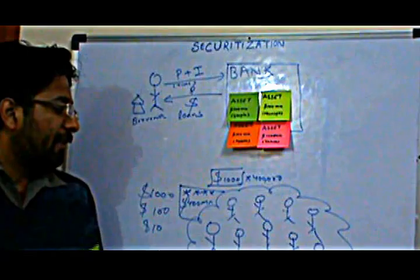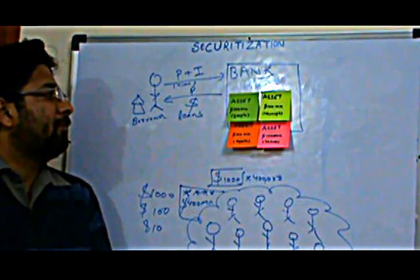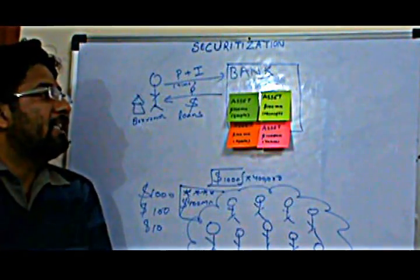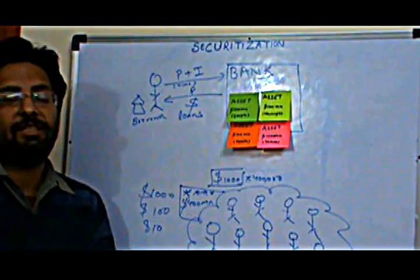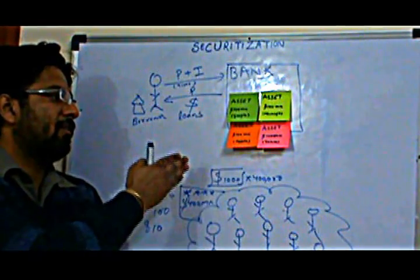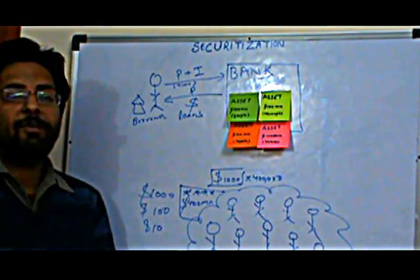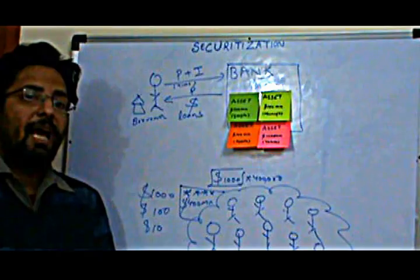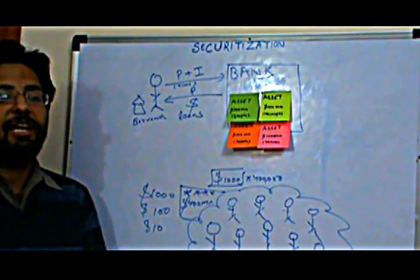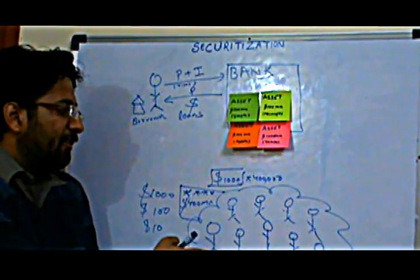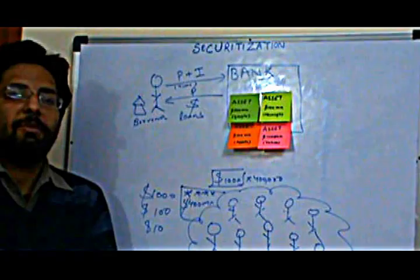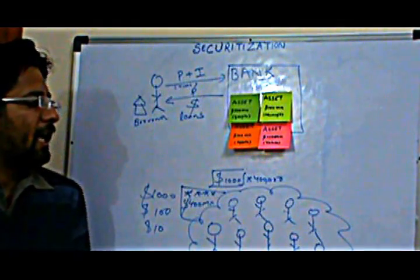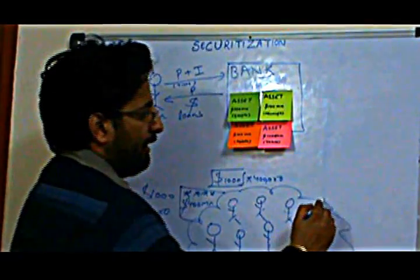Now considering the fact that these are securities with underlying assets from Google, Microsoft, Apple, and Yahoo, this becomes hot selling cake in the market and everyone is attracted to them. So this set of investors buy them as soon as possible when they are released in the market, and hence the bank gets their cash.